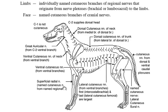The skin of the limbs is innervated by named branches of the named nerves that arise from the brachial or the lumbosacral plexus — for example, a superficial radial nerve, a medial cutaneous antebrachial nerve, a lateral cutaneous sural nerve, etc. The skin of the face is innervated by named branches of the trigeminal cranial nerve.